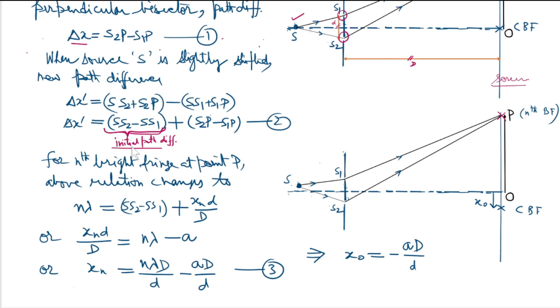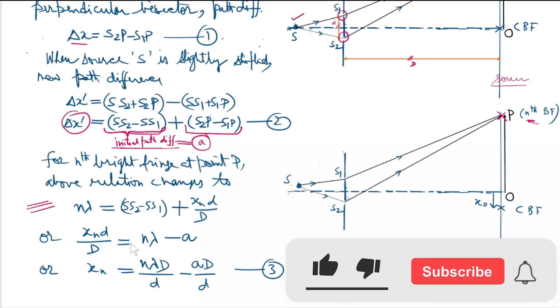This quantity is identified as initial path difference. Let the value of initial path difference be equal to small a. Further, let's assume there is nth bright fringe at point P. In that case, path difference got to be equal to nλ, and the value of S2P minus S1P should be given by xₙd upon capital D. This term can further be rewritten as xₙd by capital D equals nλ minus a.